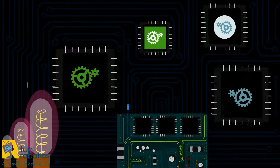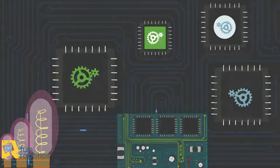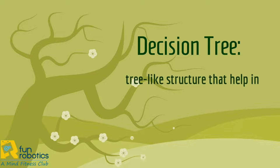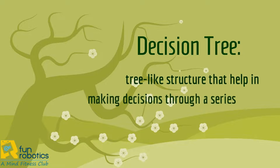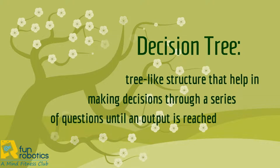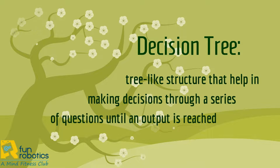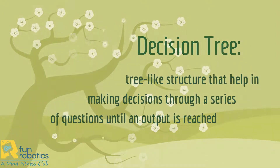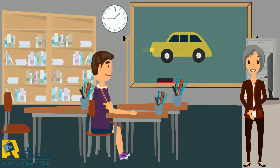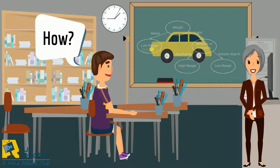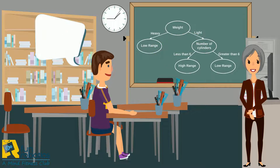What are decision trees? Decision trees are tree-like structures that help in making decisions through a series of questions until an appropriate output is reached. For example, let's try to predict if a car has low or high range, given the weight and the number of cylinders it has.